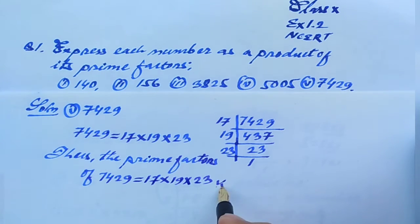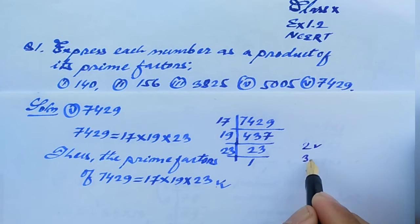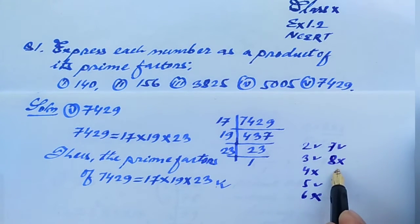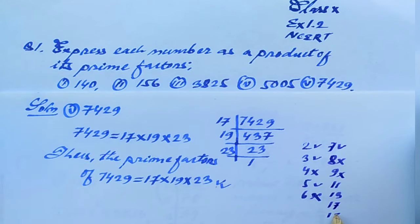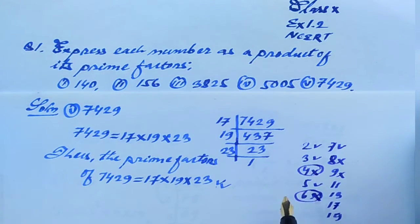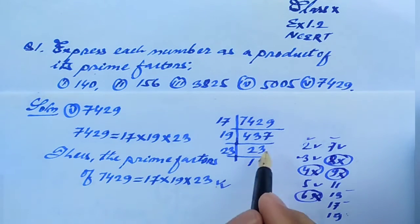Children, here is how to find the LCM of bigger prime numbers. Prime numbers have only two factors. Two, three, five, seven, eleven, thirteen, seventeen, nineteen are all prime numbers. You should always try to divide by prime numbers only, since the question asks for prime factors. So four, six, eight, nine are not prime — we must test only two, three, seven, eleven, thirteen, nineteen, and so on.